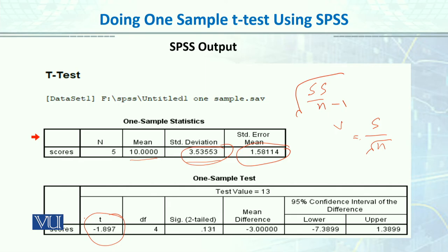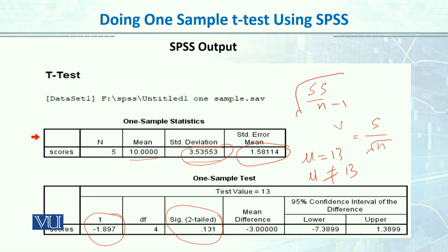Ab yeh usne t-test ki value calculate ki, which is this one. So t ki value minus 1.89 hai. Yeh two-tailed ke upar — by default agar aap t calculate karenge to woh two-tailed ke upar karta hai. So woh assume karta hai ki value kam ya zyada ho sakti hai, meaning the alternative is that mu is not equal to 13. So t ki value minus 1.89 hai. P ka matlab hai ki aapki significance value 0.13 hai, aur humne isko 0.05 se compare karna hai. So 0.05 se compare ka matlab hai ki yeh value hamesha 0.05 se chhoti honi chahiye. If this is smaller than 0.05, it means that results are significant, and if the results are significant, we will reject the null hypothesis.